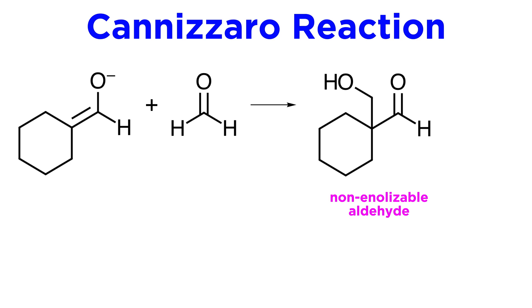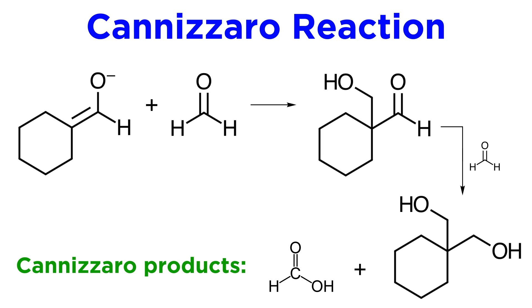However, the crossed-aldol product is also a non-enolizable aldehyde, given that this alpha-carbon is now a quaternary center, so this can be involved in a Cannizzaro reaction with formaldehyde or with itself. If the chemist carrying out this procedure is not careful and does not control the reaction, they may end up obtaining only the Cannizzaro products.